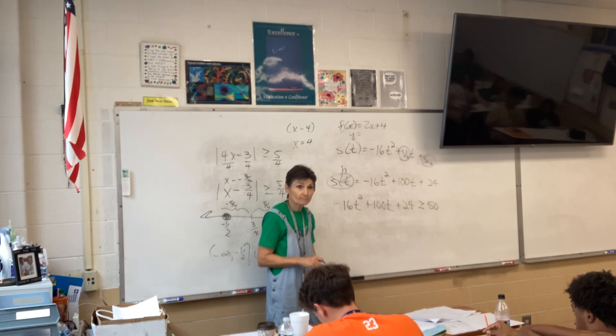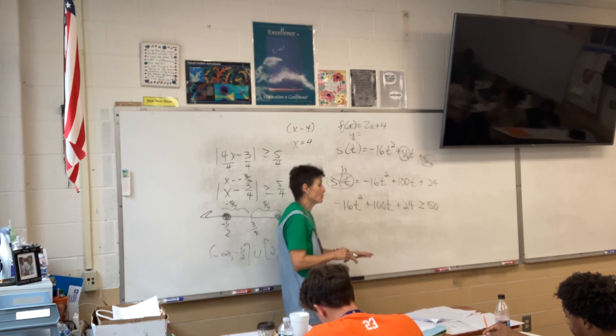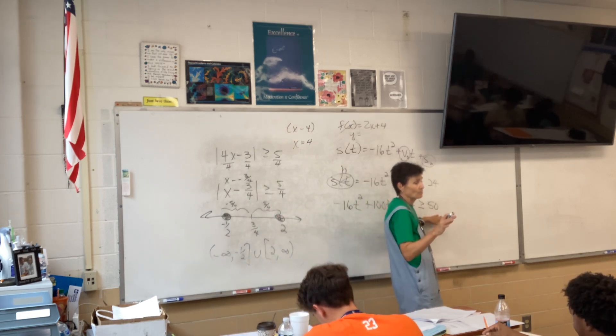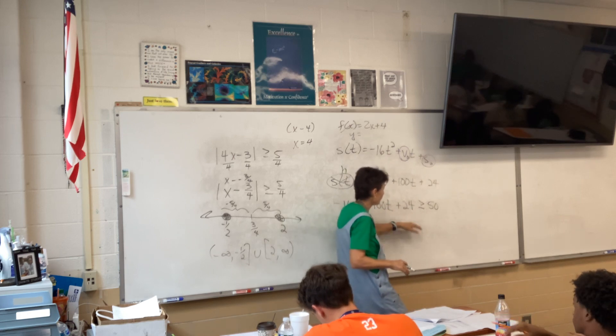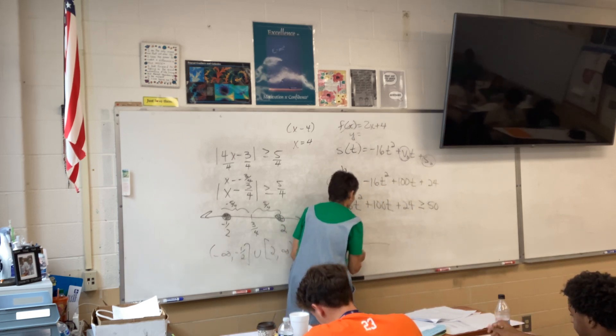So, I want my height, this is my height, to be at least 50. If it equaled 50, I would just set it equal to 50. I want it greater than 50. Now, could I do this problem the same way I did the box problem?